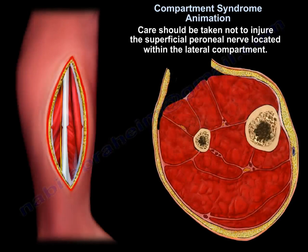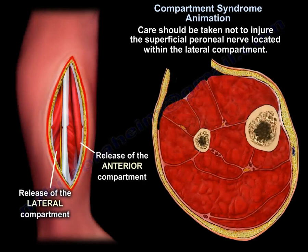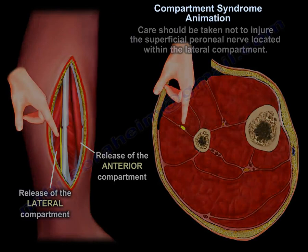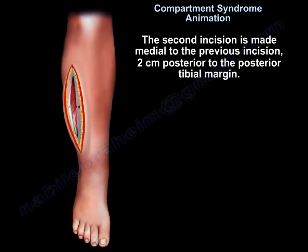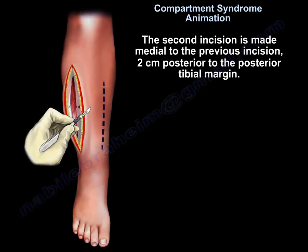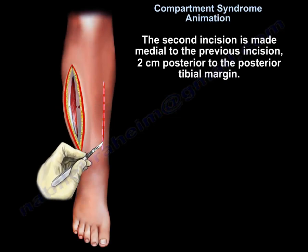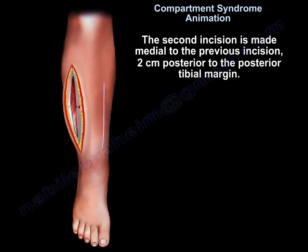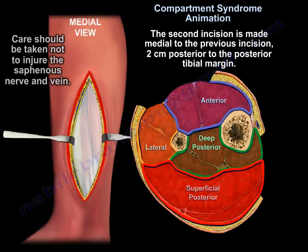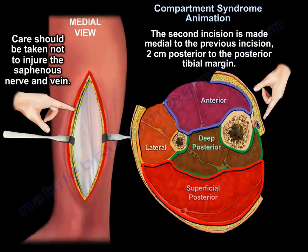Care should be taken not to injure the superficial peroneal nerve located within the lateral compartment. The second incision is made medial to the previous incision, 2 cm posterior to the posterior tibial margin. Care should be taken not to injure the saphenous nerve and vein.